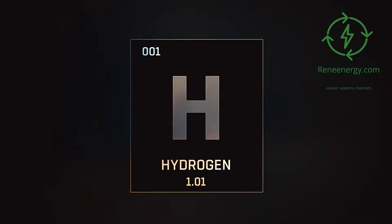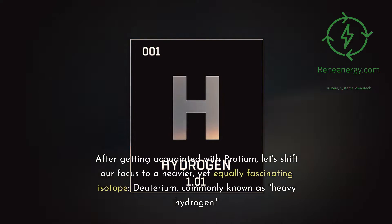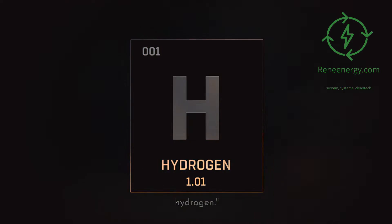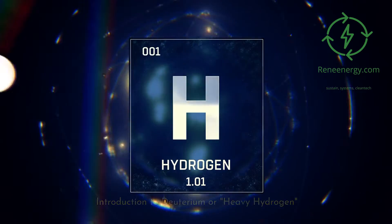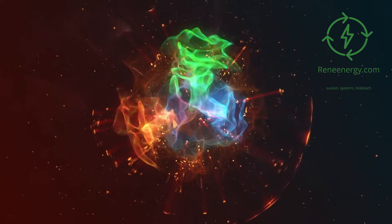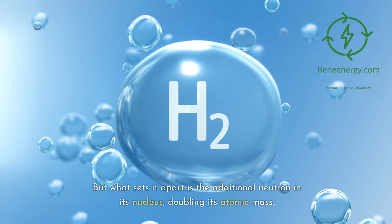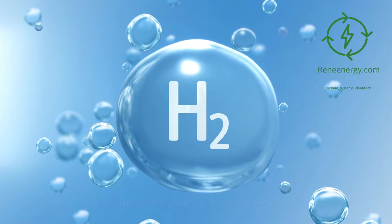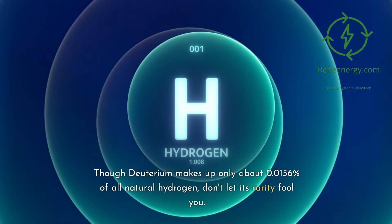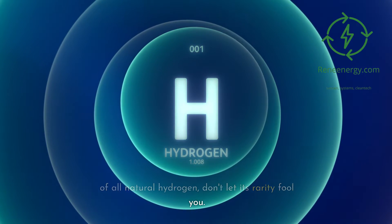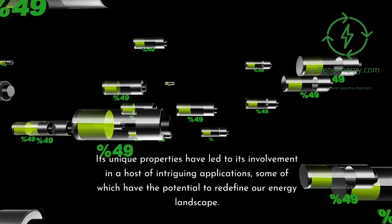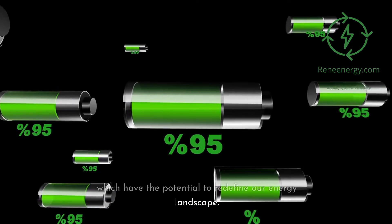The Deuterium Deep Dive. Let's shift our focus to a heavier yet equally fascinating isotope: deuterium, commonly known as heavy hydrogen. At its core, deuterium is similar to protium, featuring one proton — but what sets it apart is the additional neutron in its nucleus, doubling its atomic mass. This extra weight earns it the moniker 'heavy hydrogen.' Though deuterium makes up only about 0.0156% of all natural hydrogen, its unique properties have led to involvement in a host of intriguing applications with the potential to redefine our energy landscape.